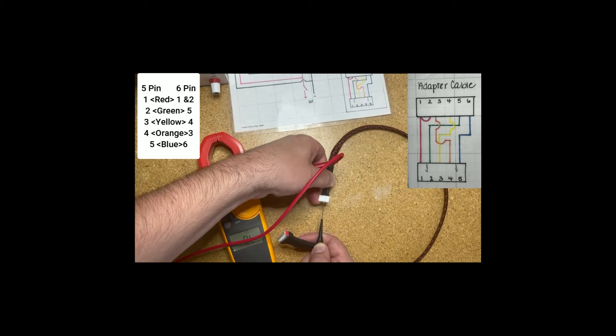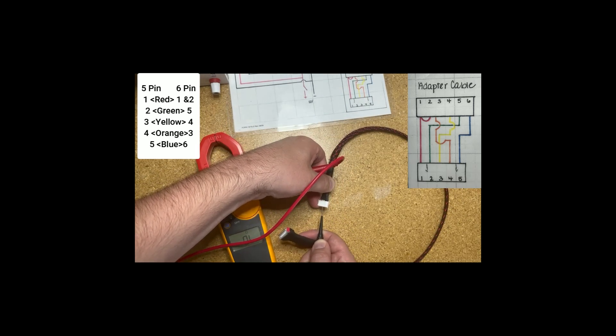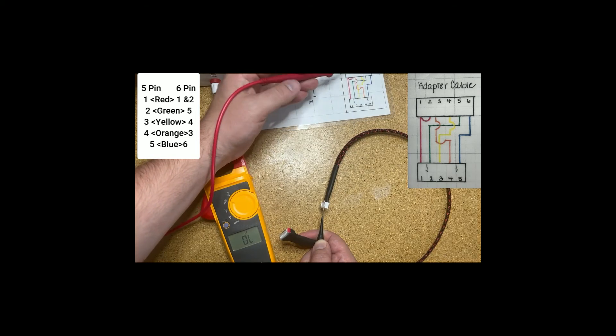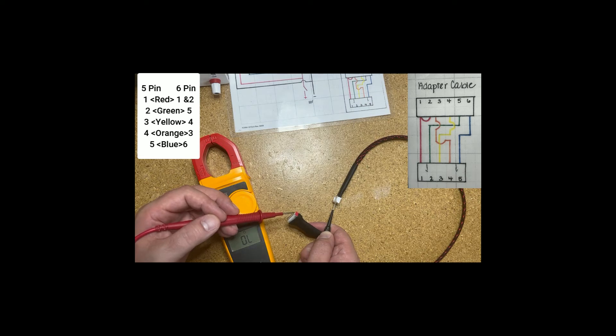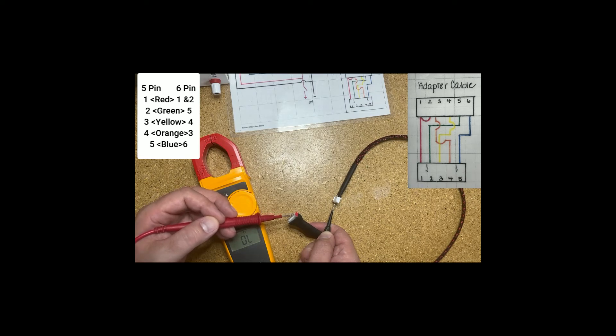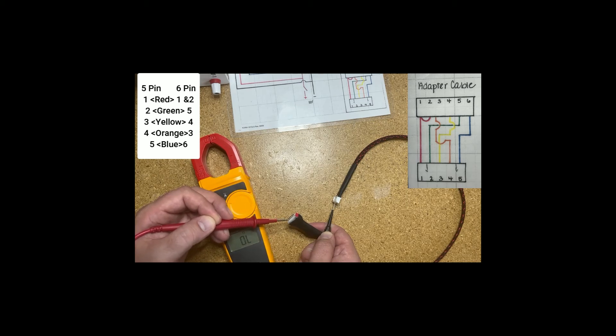Moving down. Yellow goes to one, two, three, four from the red side. I go no continuity, good. No continuity, good. No continuity, good. Good. And good. On the fourth, nothing on the fifth and nothing on the sixth.